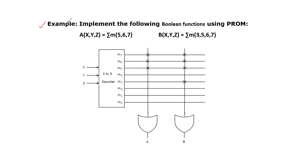Now let us see one example regarding PROM. Implement the following boolean functions using PROM. Two boolean functions are given: A(X, Y, Z) = sigma M(5, 6, 7) and B(X, Y, Z) = sigma M(3, 5, 6, 7). The outputs of the PROM should be A and B, and the inputs of PROM should be X, Y, Z.